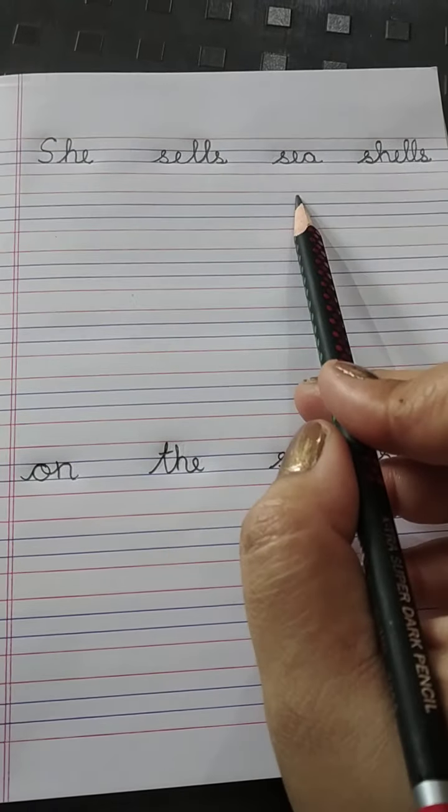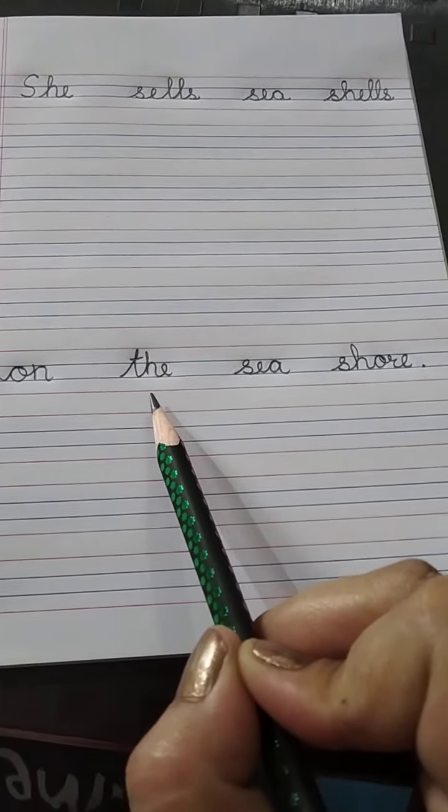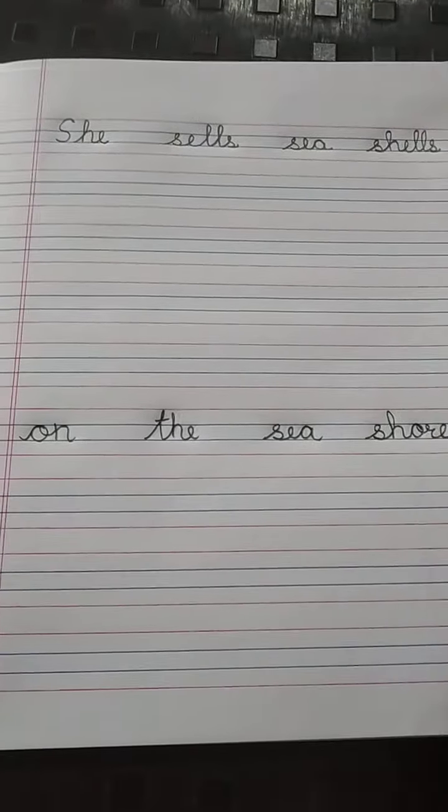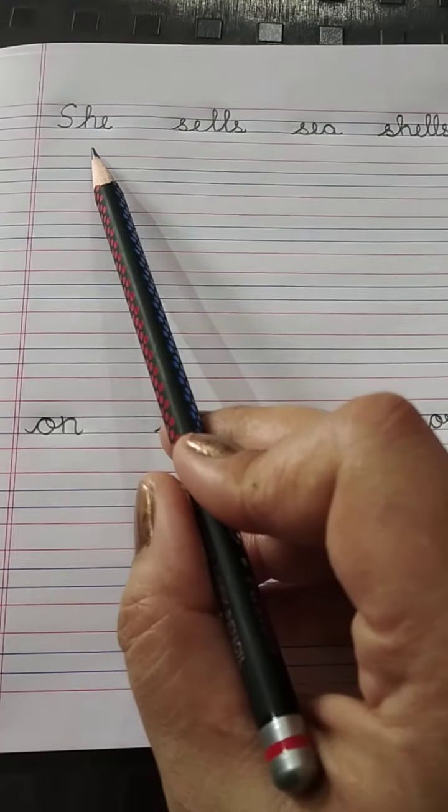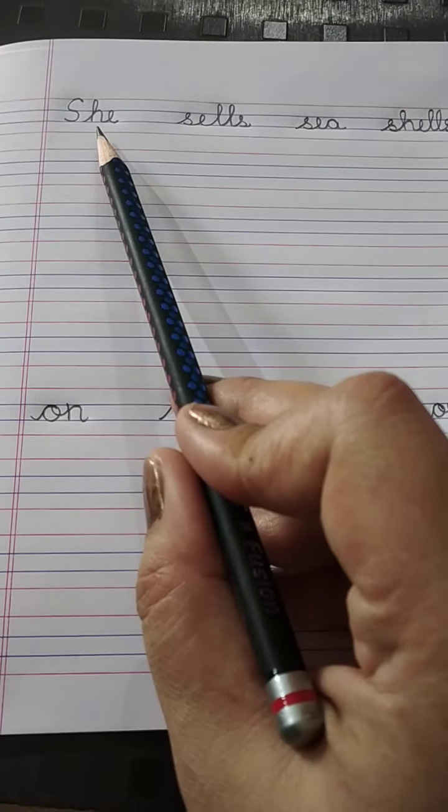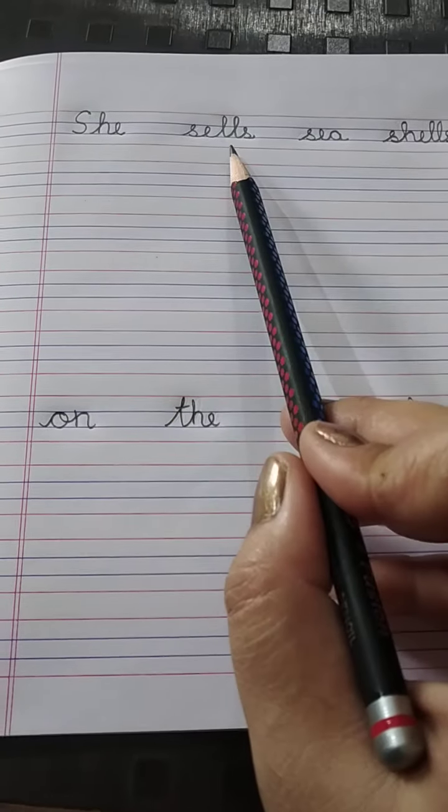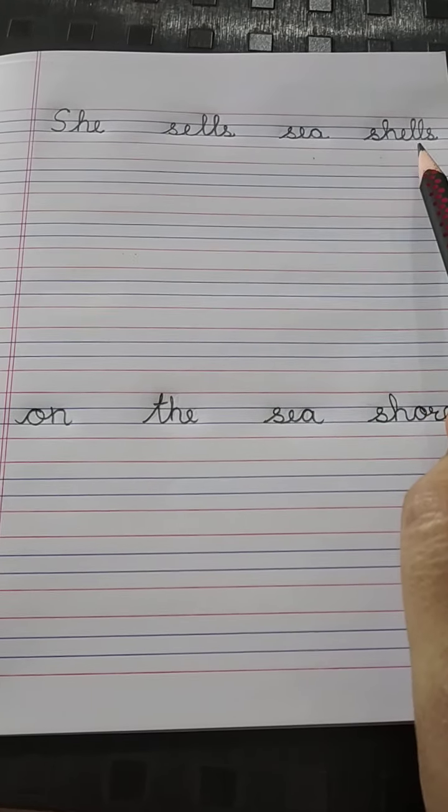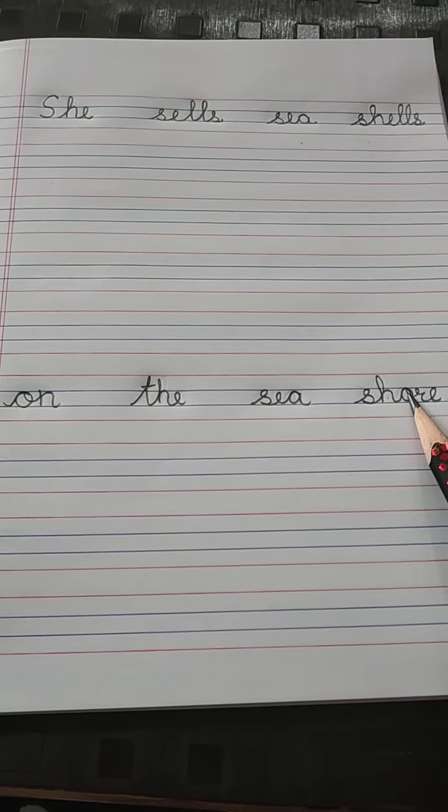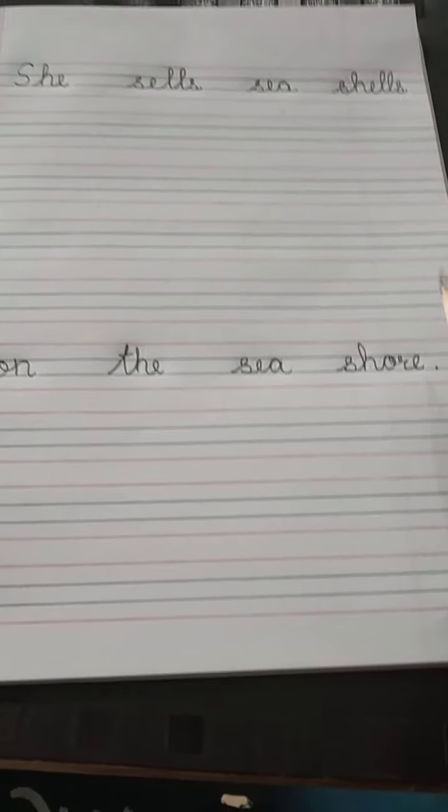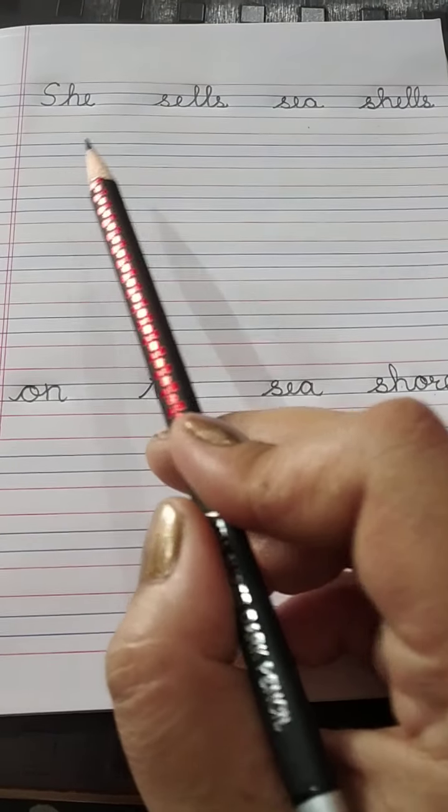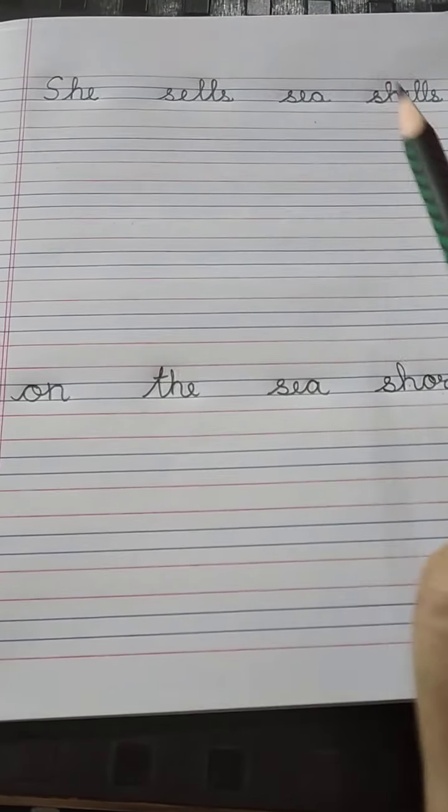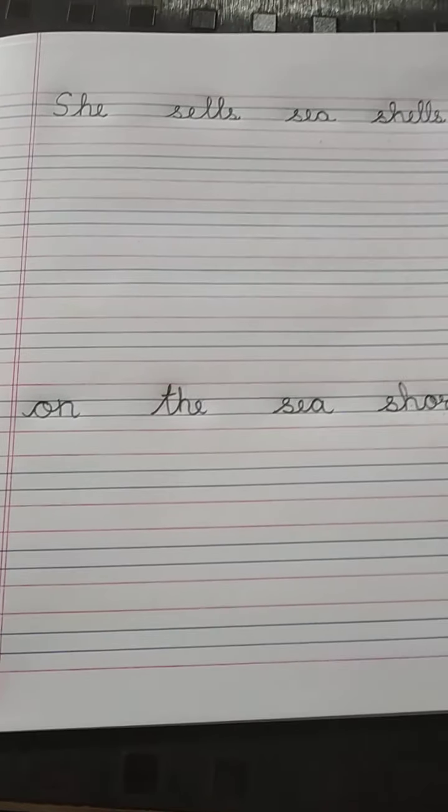She sells sea shells on the sea shore. This means she, who is to say? Girl. Boy we say he, and girl we say she. Sell means bêchna, sea means samudra, shells means shunk, shore means kinara. Okay? Toh ek girl hai woh samudra kinara pe shells bêch rahi hai. Okay, yeh sentence ka meaning hai.